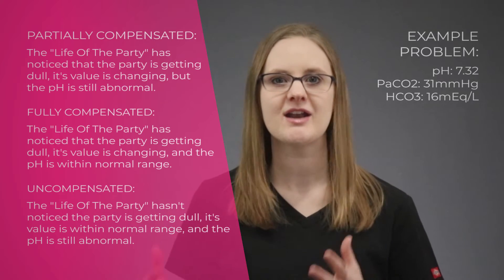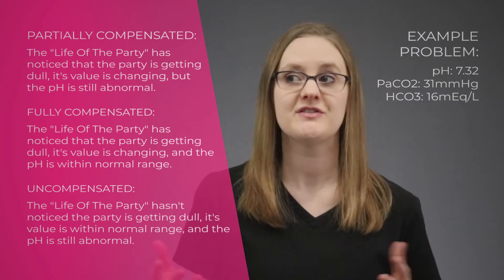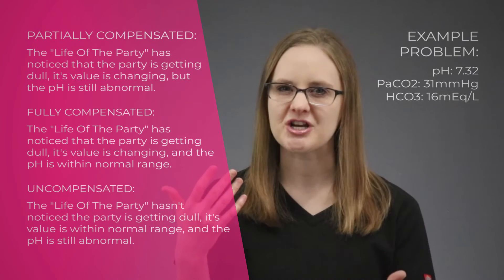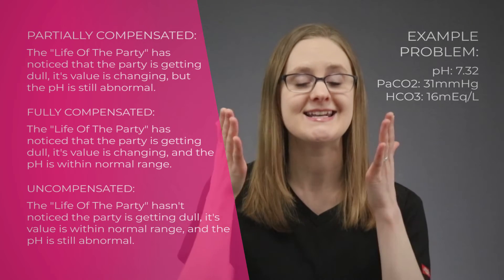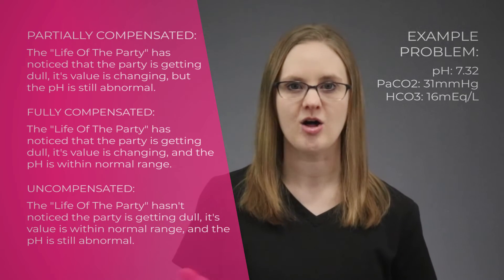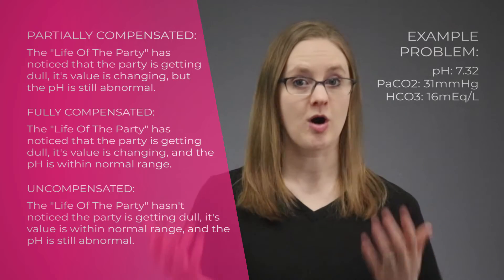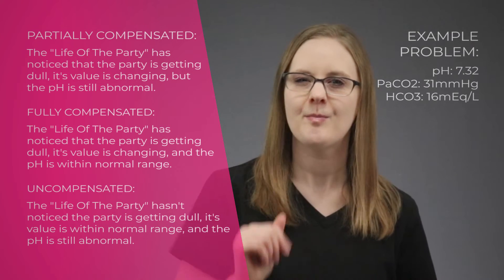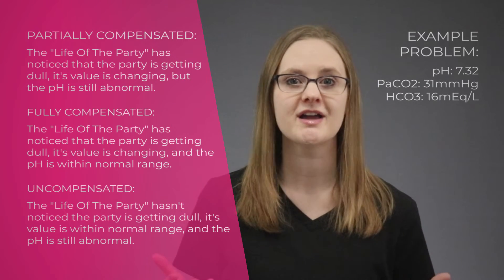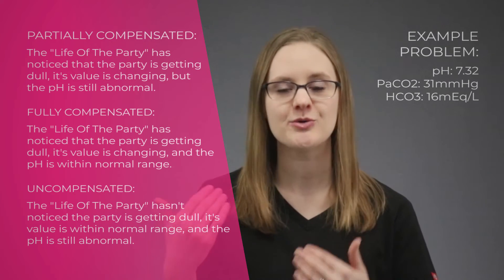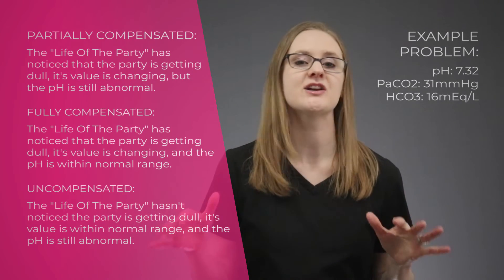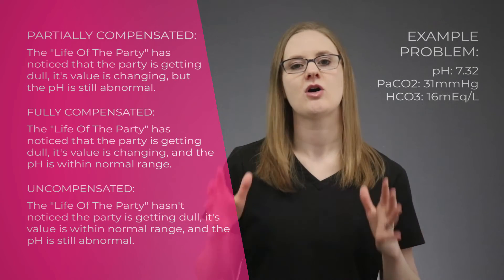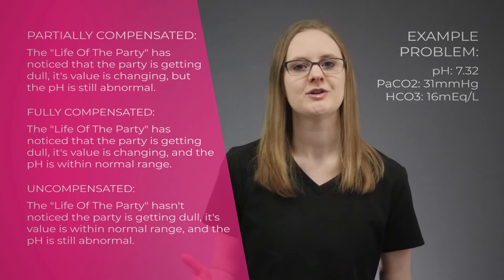We just need to look back at the pH level to determine if it's partially or fully compensated. If the pH is within normal range, it's fully compensated. But if the pH is outside of normal range and the life of the party's value is still changing — in this case it's the lungs and yes, the lungs are trying to help — then it's partially compensated. So partially compensated means the pH isn't quite back to normal range, but the life of the party is working on it. If the lungs hadn't noticed anything was wrong and their value wasn't changing, that would make this example uncompensated.